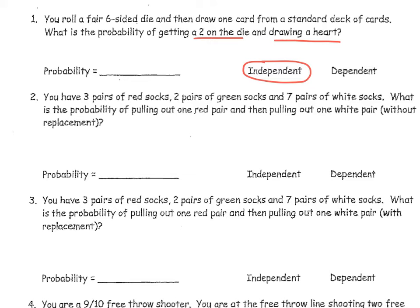To calculate the probability, I'll start with the probability of getting a two on the die. On a fair die, there is one two out of six total sides, so my probability of getting a two is 1 out of 6. Now the probability of the second event — drawing a heart from a standard deck of cards. In a standard deck there are 52 total cards and 13 hearts, so my probability of getting a heart is 13 out of 52. Since these are compound events, I need to multiply these two.